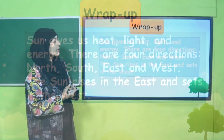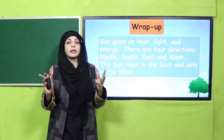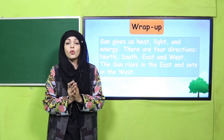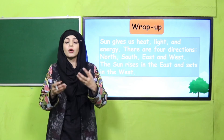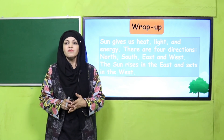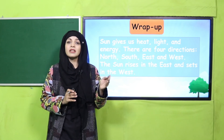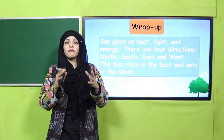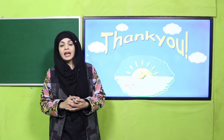Wrap-up: The Sun gives us heat, light, and energy. There are four directions — North, South, East, and West. The Sun rises in the east and sets in the west. The Sun is extremely important — it gives us energy, light, and heat, and also helps us find directions. The four cardinal directions are extremely important for finding out different places around you. Keep everybody safe. Thank you so much. Have a good day. Allah Hafiz.